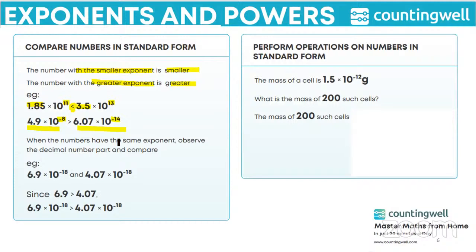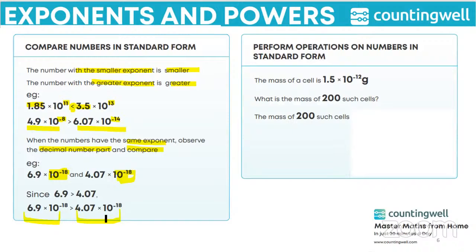When the numbers have the same exponent, we observe the decimal number part and then compare. Here we have the same exponent 10 to the power minus 18 for both numbers, and the decimal parts are 6.9 and 4.07. Since 6.9 is greater than 4.07, the number on the left side is greater than the number on the right.